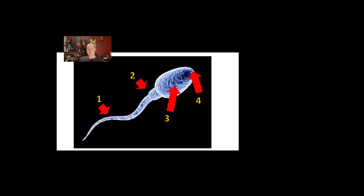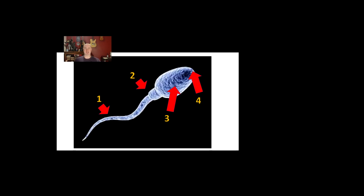Number two: the mitochondria. The mitochondria are there to release energy. Talk about releasing energy, not producing energy, because energy is conserved — it can't be made or destroyed. So we talk about the mitochondria releasing energy through respiration, and that energy is used to power the tail.